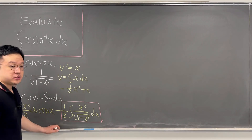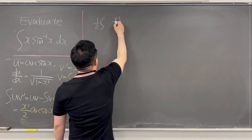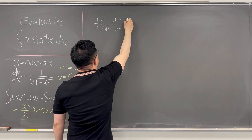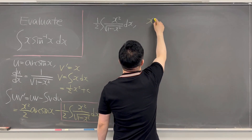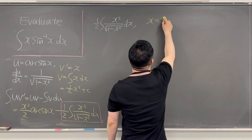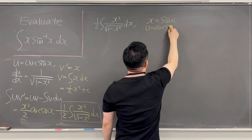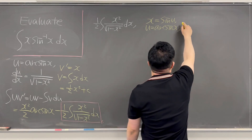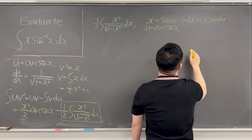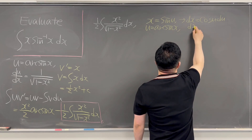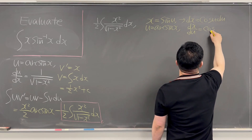Now let's focus on this remaining integral. It looks like we need to make a trigonometric substitution. So for this integral — 1/2 times the integral of x squared over square root of 1 minus x squared dx — I'll be calling x equal to sine(u), which means u equals arcsin(x). And then your dx is equal to cosine(u) du.